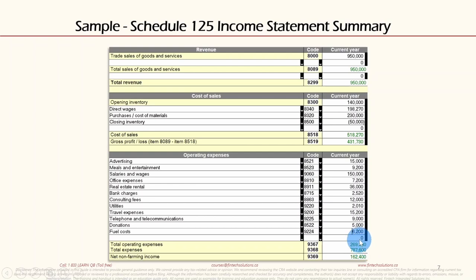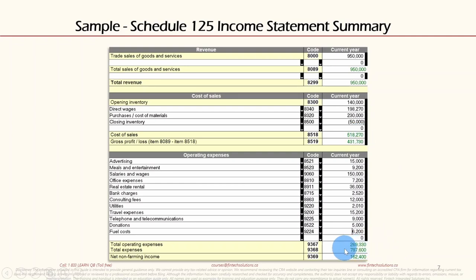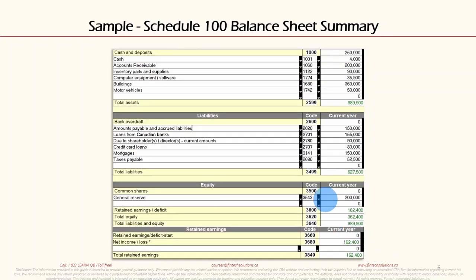Operating expenses are most often the largest section in these statements. Total expenses — code 9367 combined — are $787,600 ($518,270 plus $269,330). Lastly, net income — code 9369 — is $162,400. So we've looked at both statements with their GIFI codes, and now you can see how the codes appear in Schedule 100 and Schedule 125.